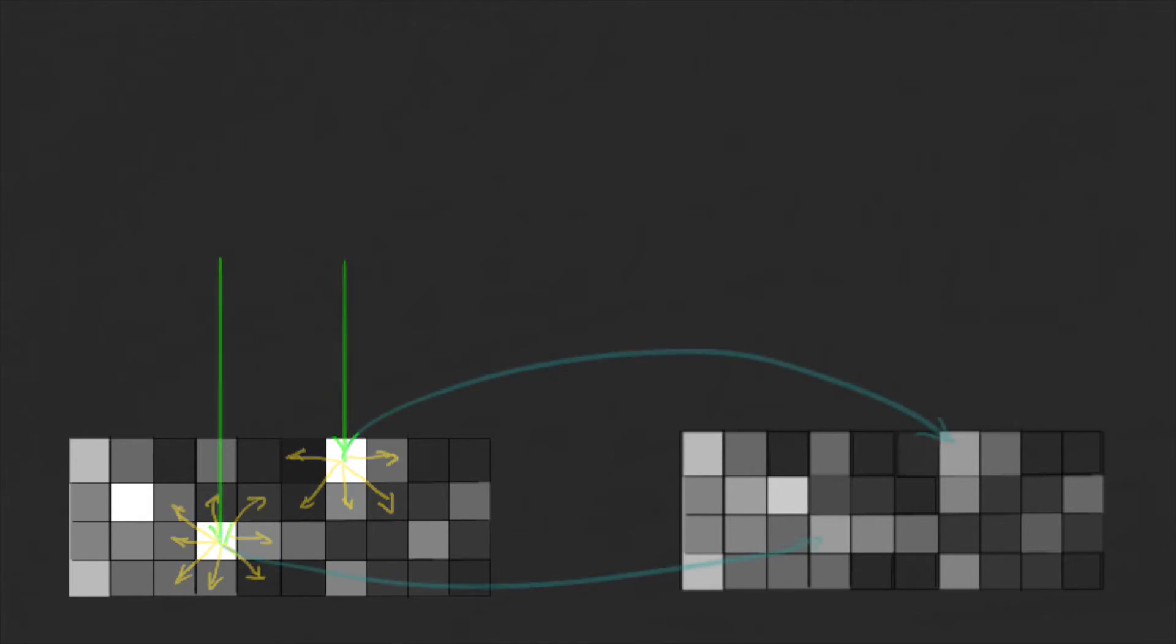If we make the kernel larger, then we will take into account pixels that are farther away, making the image blurry.